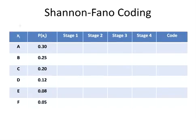What we're going to do is set it up with a column for each of the stages we're going to go through. At each stage, what we're going to do is partition the set of symbols. I have the example in front of me, so I know there's going to be four stages, but you wouldn't know that in advance. What we're going to do first is partition our set of symbols according to the idea that the sets must be as close in terms of probability as possible — so, as equally probable as possible.